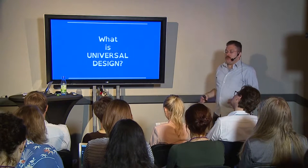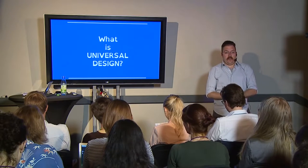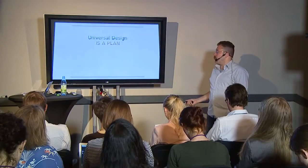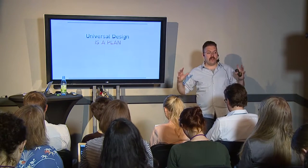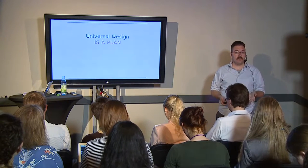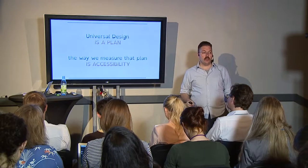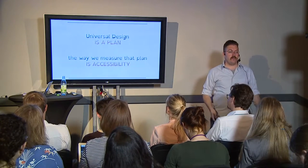So enter universal design. Universal design is a very simple principle that's incredibly complex to execute — it means designing a single design that works for the widest possible audience. We're going to take this singular design and that's how we're going to approach the problems we want to solve. The way we test how universal a design can be is through accessibility — universal design is a plan, and we measure that plan by looking at the periphery, the far edges of the spectrum.